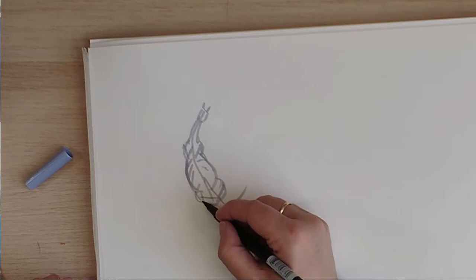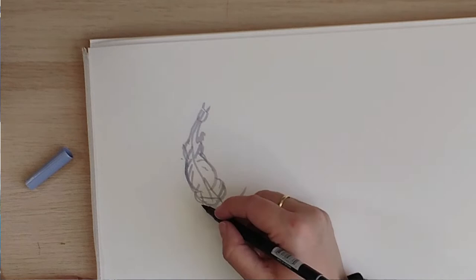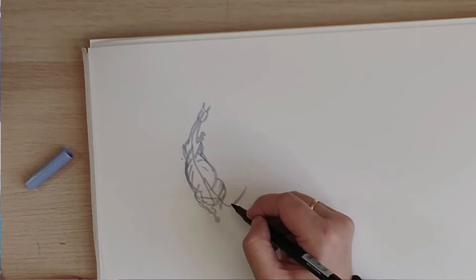And then we can add legs. One behind here, they're of course very much foreshortened.